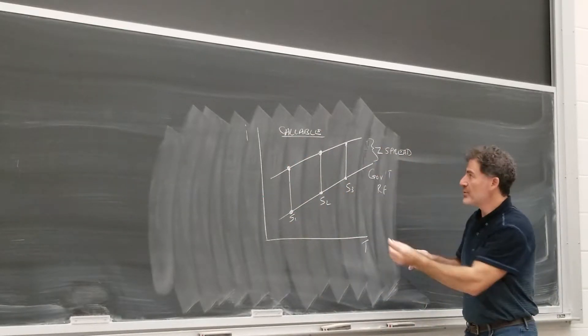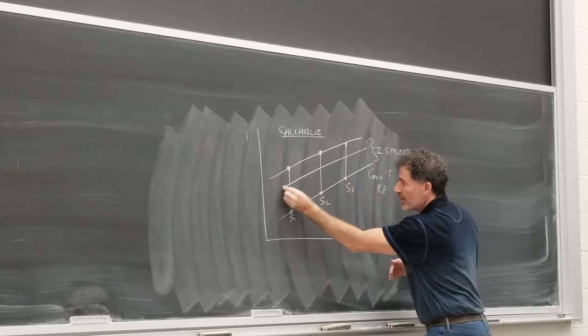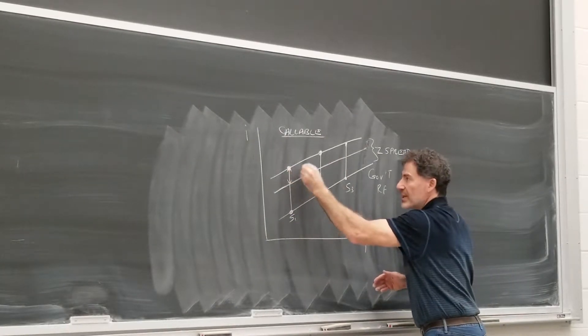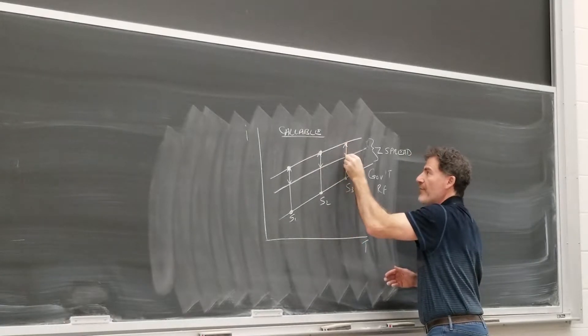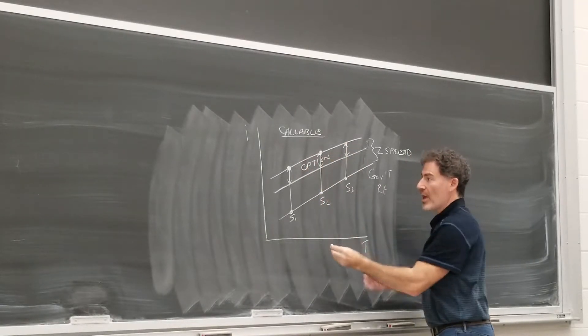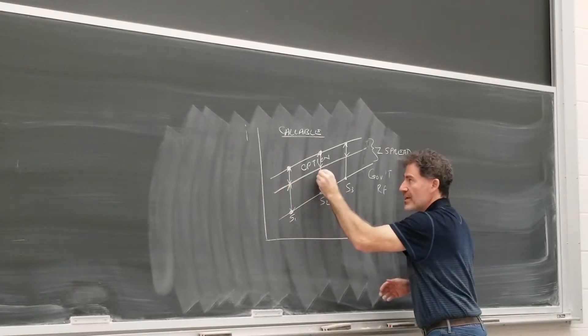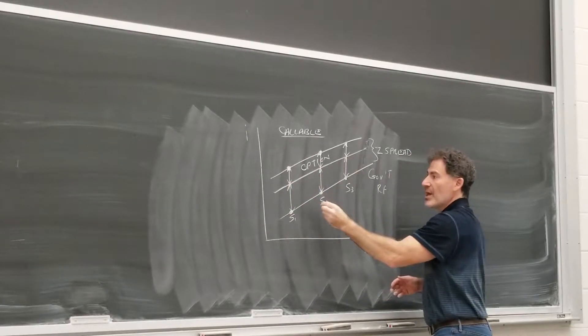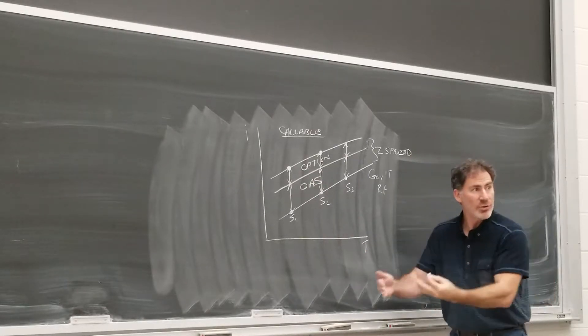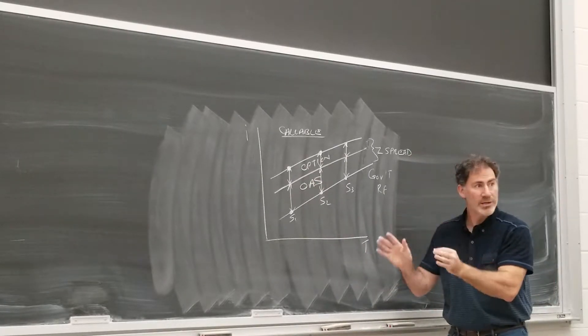Well, this Z spread will be adjusted and I'm just going to draw a line in here. And what have we done? Well, this distance here represents the value of the option, the option value. And then this distance here represents the option adjusted spread.